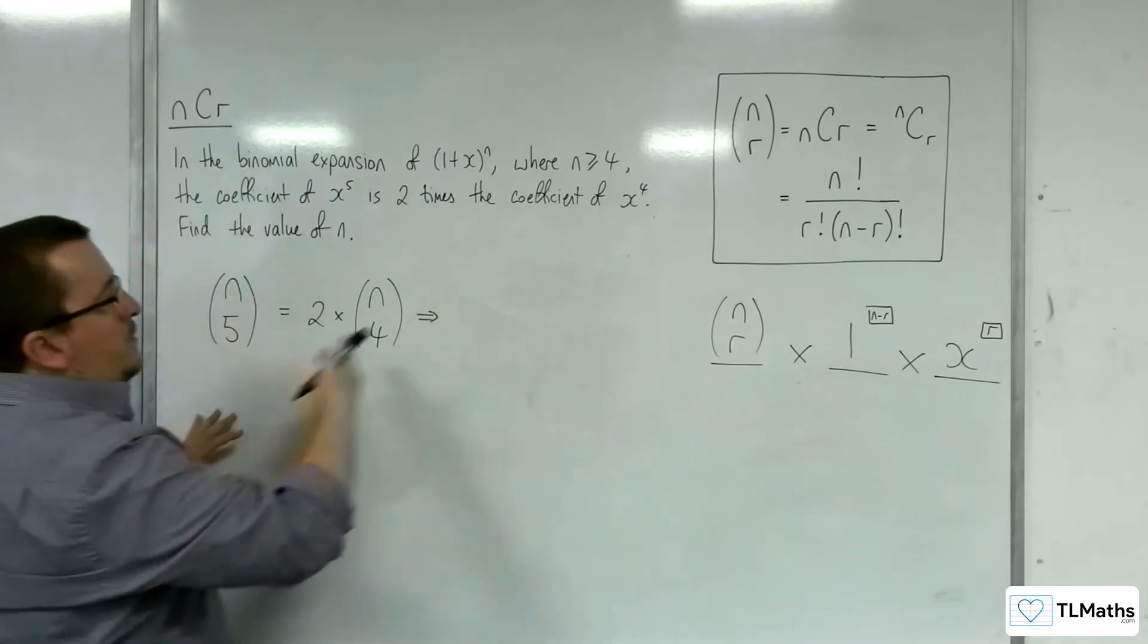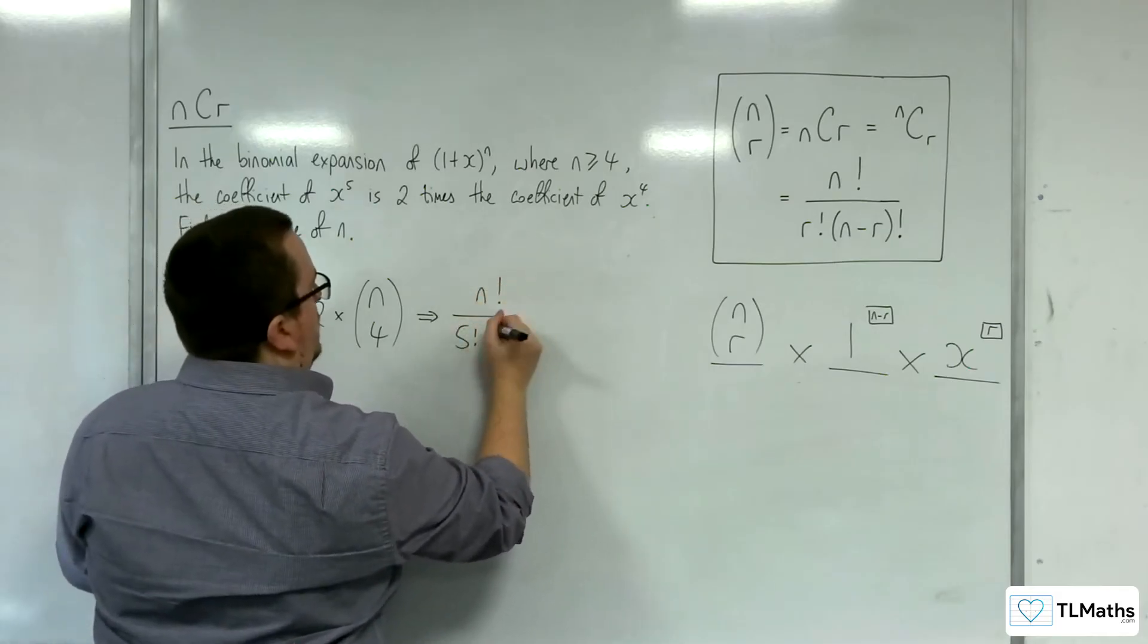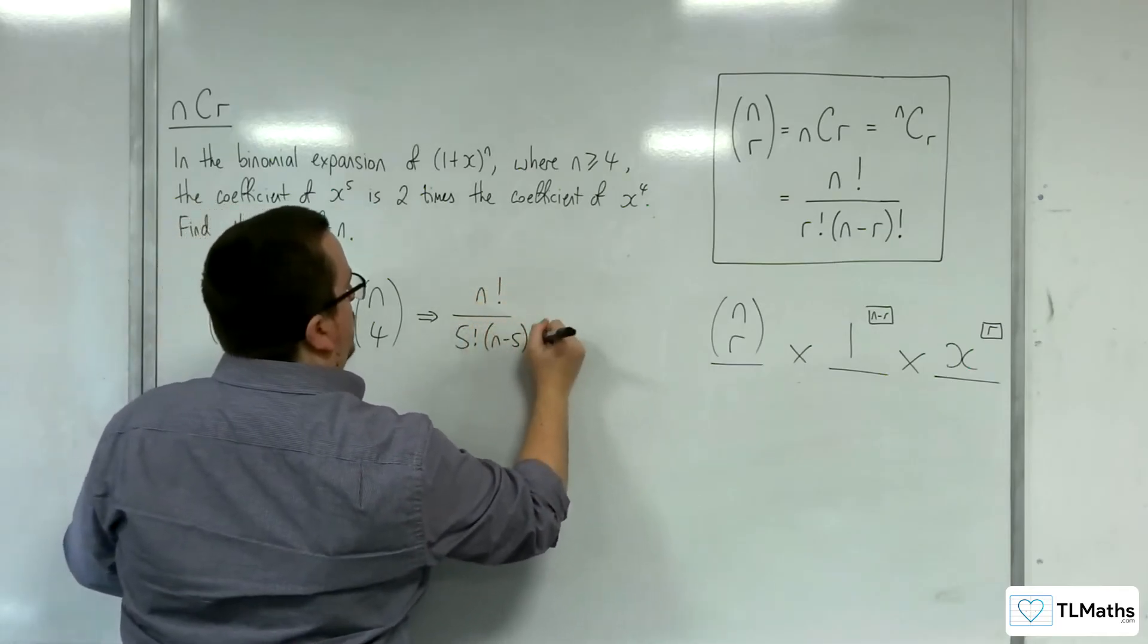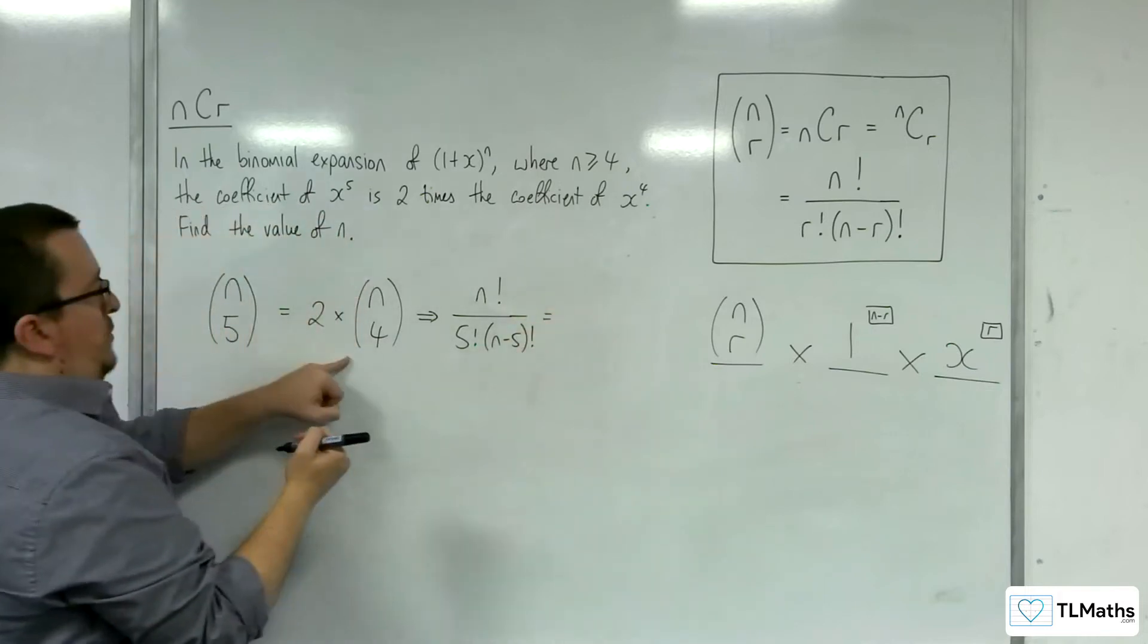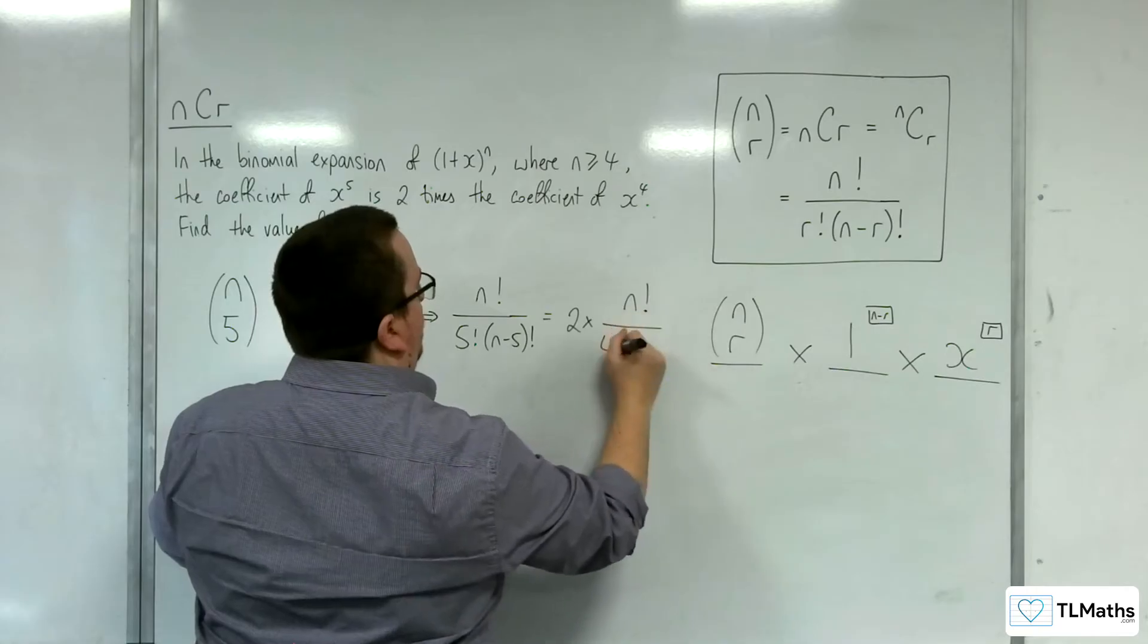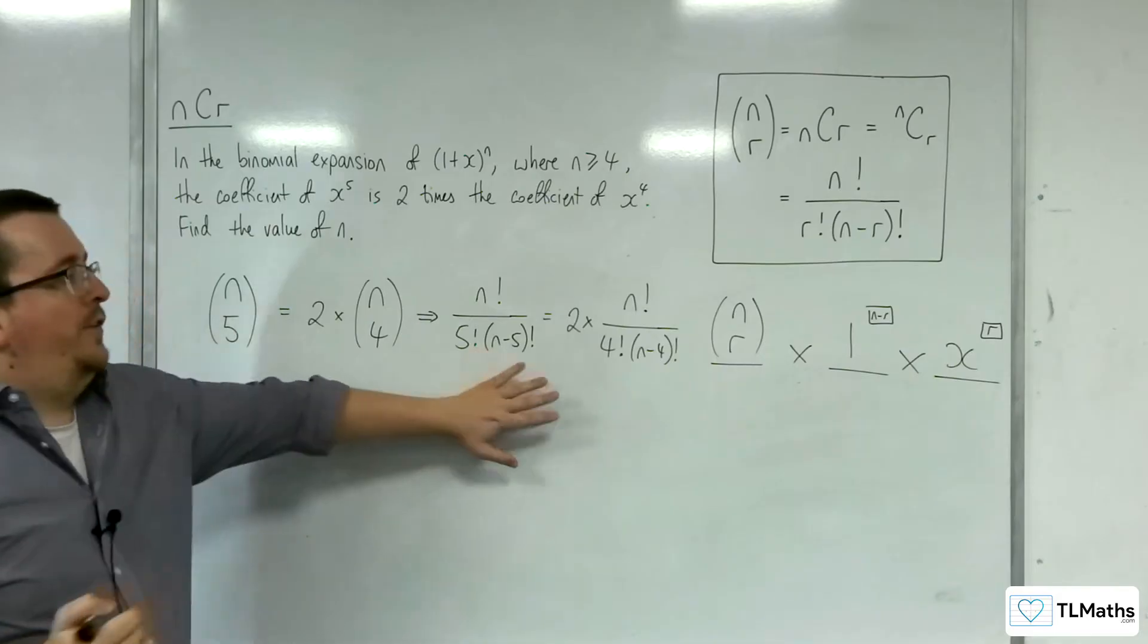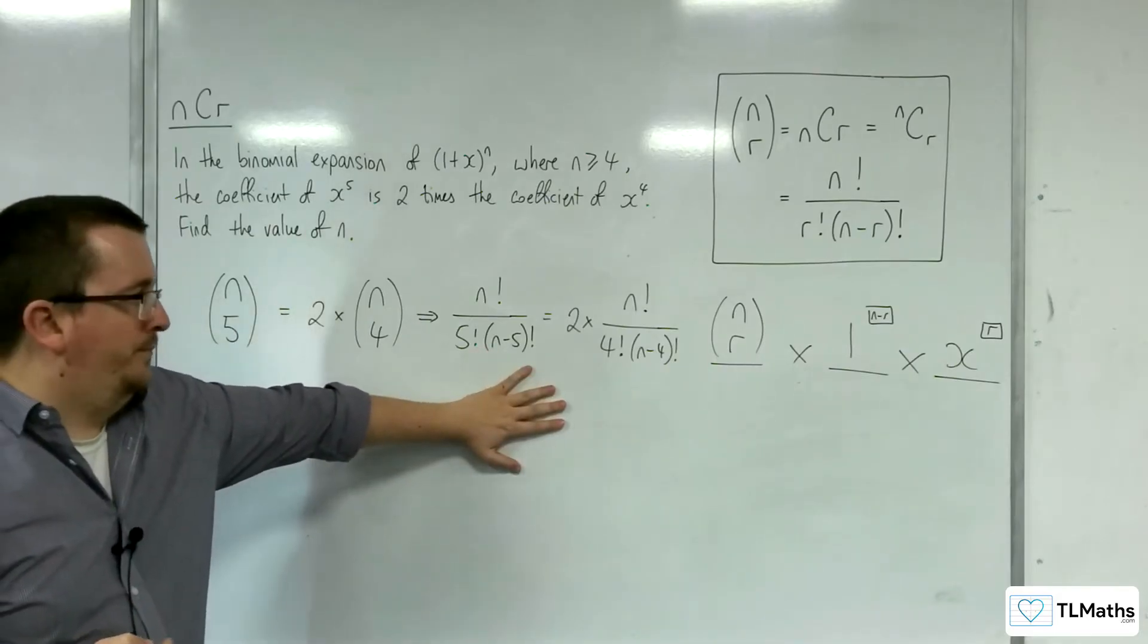So we've got nc5, so n factorial over 5 factorial, n take away 5 factorial, is equal to 2 times n factorial over 4 factorial n minus 4 factorial. This is the equation I need to solve.